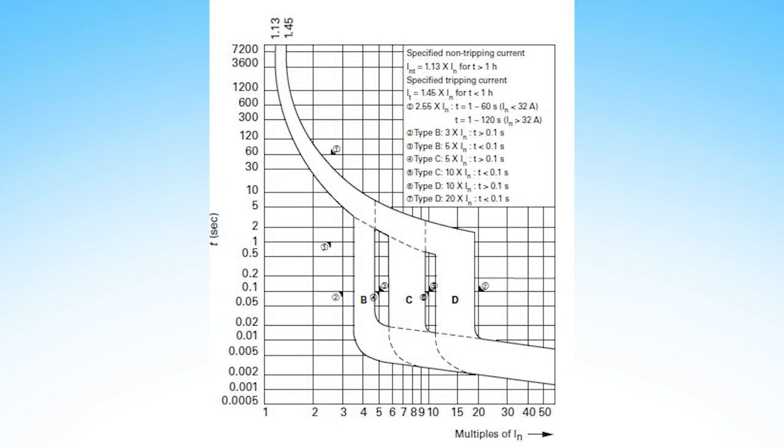This curve has three different curves in one chart because the breakers for this chart are available in B, C, or D curves. Let's look at the range of a typical motor inrush. This is usually six to eight times the FLA.